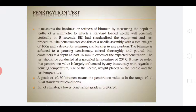In India, according to IS 73:1992, the penetration grading system classified paving bitumen into six grades: S35, S45, S55, S65, S90, and S200. For example, grade S35 means the penetration value is in the range of 30 to 40, and S65 means the penetration value is in the range of 60 to 70, as also mentioned in MORTH 2001.